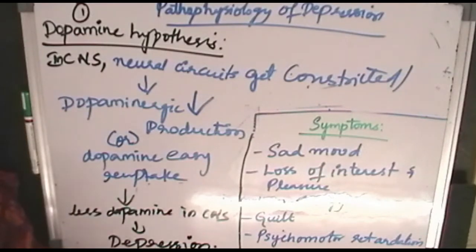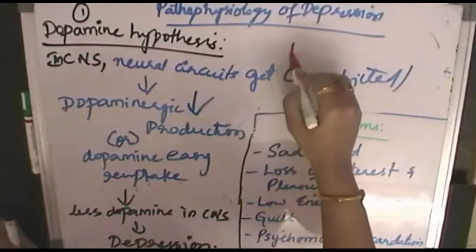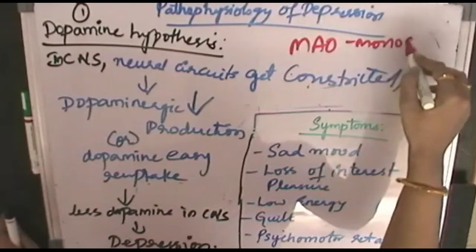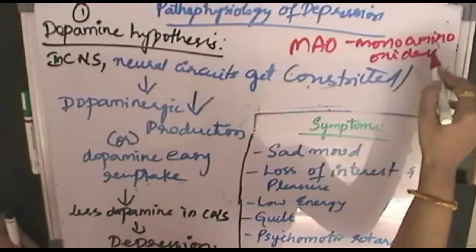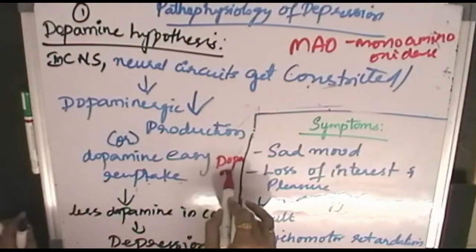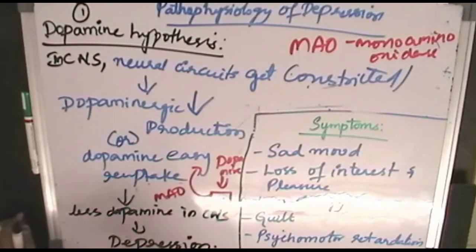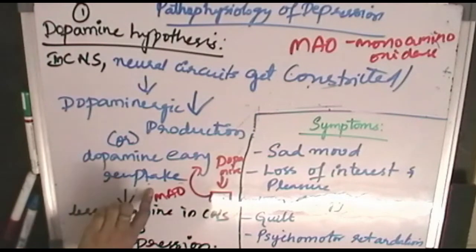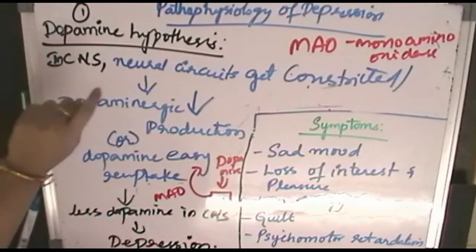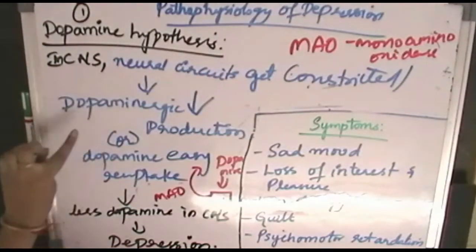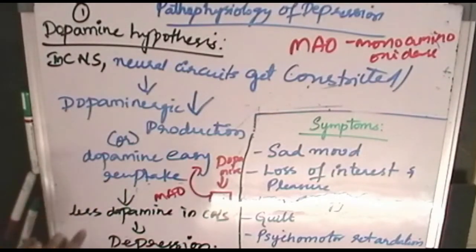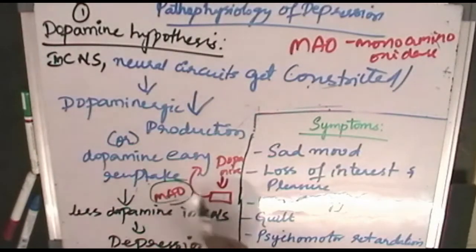Dopamine conversion occurs due to monoamine oxidase enzyme. Dopamine converts into its final product and this reuptake is facilitated by the monoamine oxidase enzyme. So when monoamine oxidase is more active, if neural circuits are constricted, there is lesser dopamine production and easy reuptake. This easy reuptake is promoted by monoamine oxidase, resulting in less dopamine in the CNS and leading to depression.